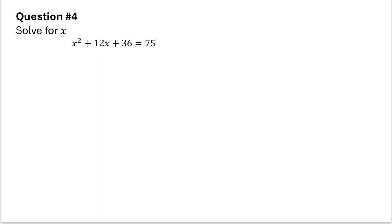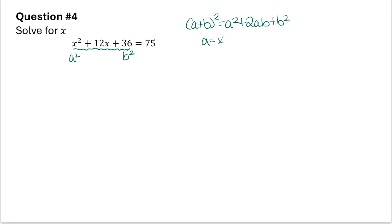In this problem I'm hoping you'll notice that the left side is a perfect square trinomial. Remember the factoring pattern: a plus b squared equals a squared plus 2ab plus b squared. If we think of the first term as a squared and the last term as b squared, that means a equals x and b equals 6. Notice that 2ab is 2 times x times 6, which is 12x, and that matches what we have. So we can rewrite this as x plus 6 squared equals 75.